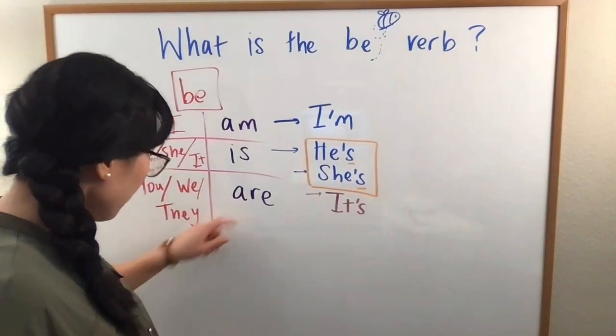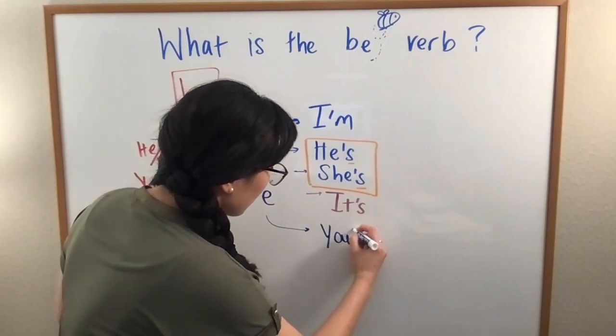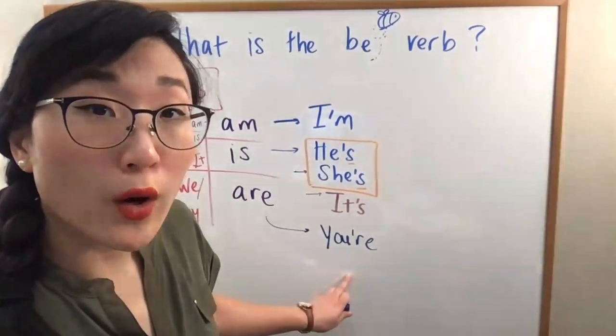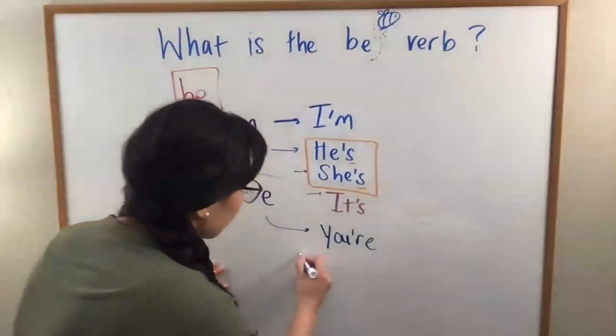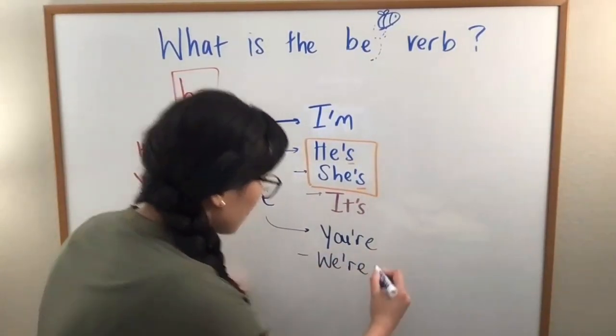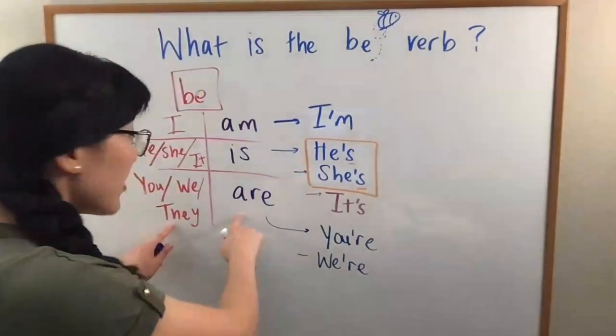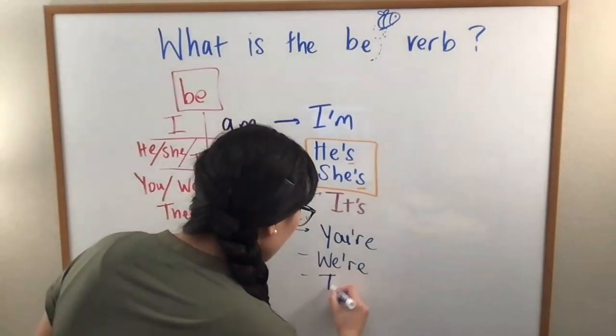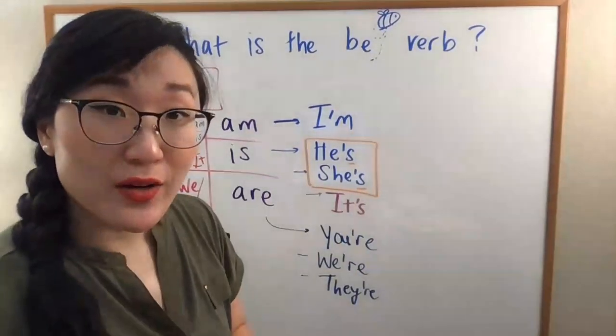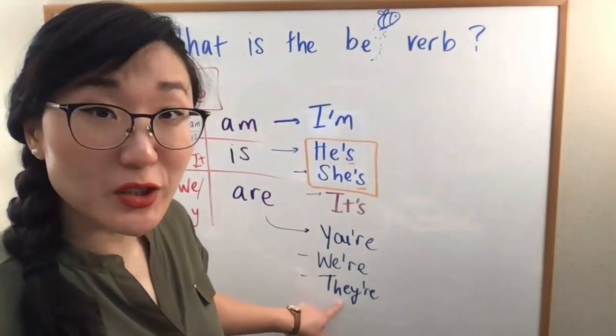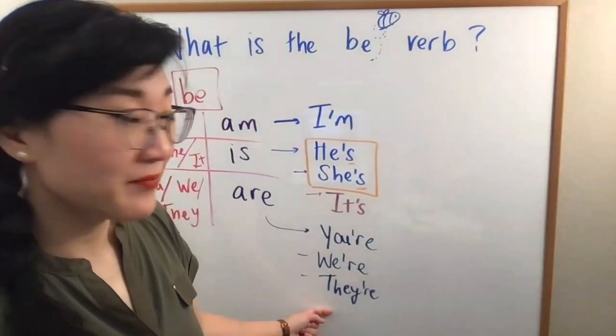All right. Now, over here. You are. You're. You're. We are. We're. We're. And then they are. They're. They're. The same pronunciation is here and there. There. There.